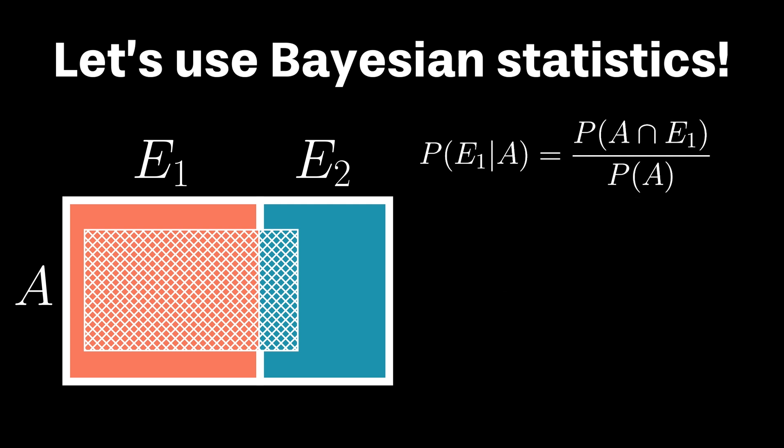We can now rewrite this equation by knowing that, as was discussed in part 1 of the series, the probability of two events, say A and E sub i, is equal to the conditional probability of A given E sub i, multiplied by the probability of E sub i.